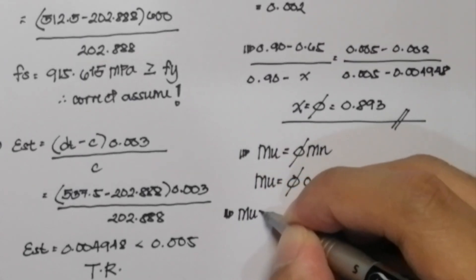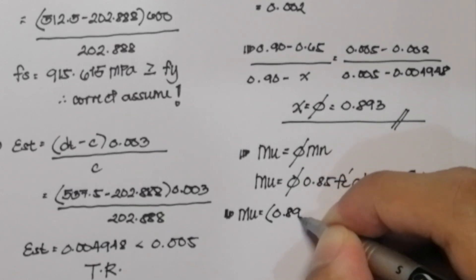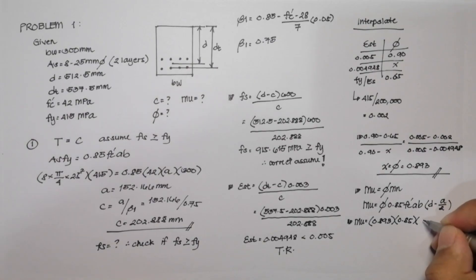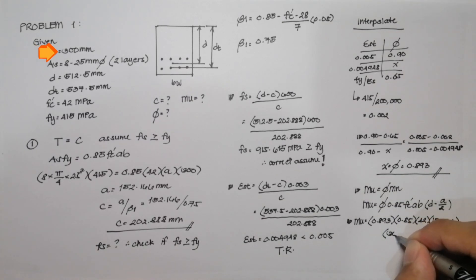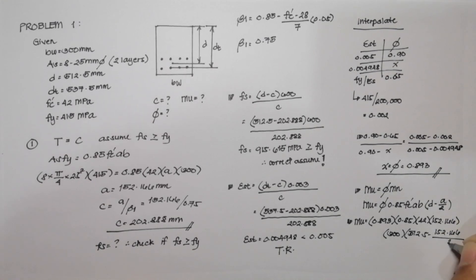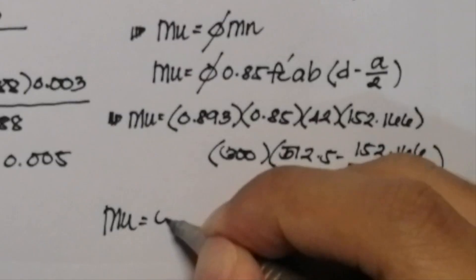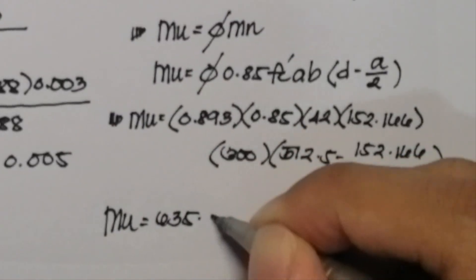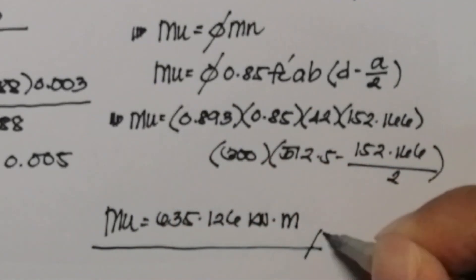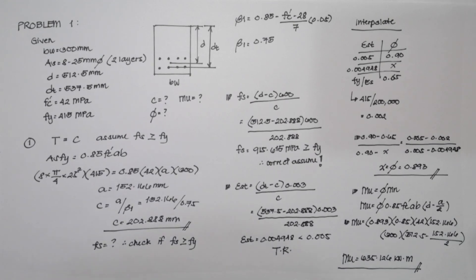Substituting our values, our phi is 0.893 multiplied by 0.85 FC' 42 MPa, value of A, 152.166 multiplied by B, 300, our base of the beam, multiplied by D, 512.5 minus A over 2, which is 152.166 divided by 2. The value of our ultimate or design flexural strength is equal to 635.126 kilonewton meter, and that will be our answer for the last question.